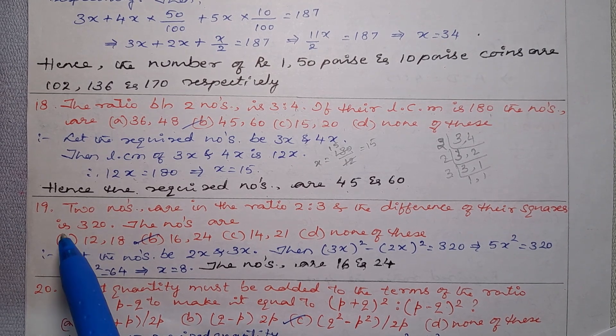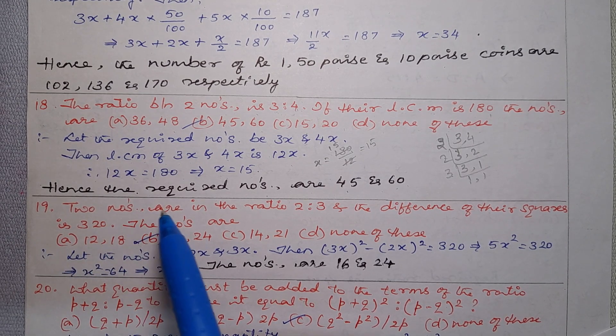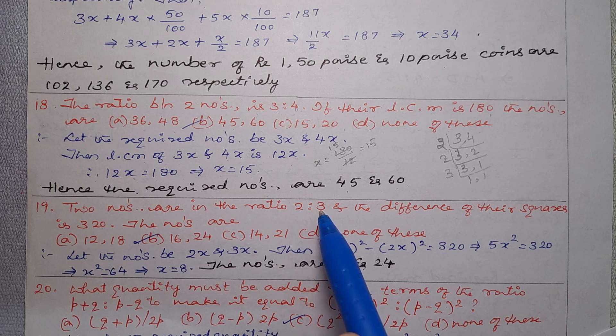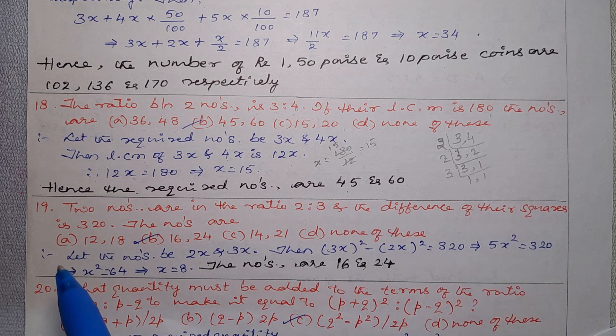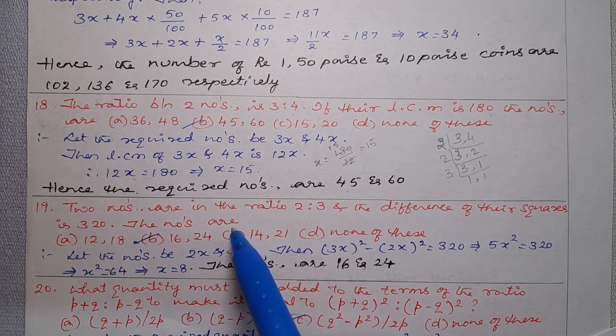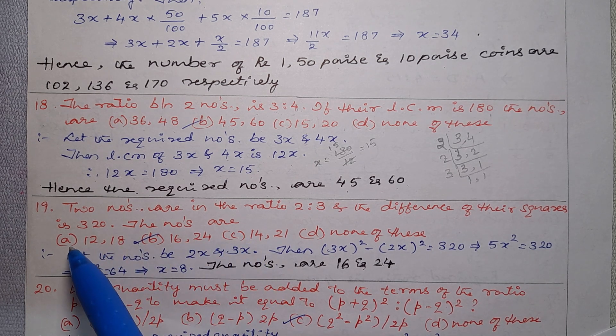Problem number 19: Two numbers are in the ratio 2 is to 3, and the difference of their squares is 320. The numbers are Option A: